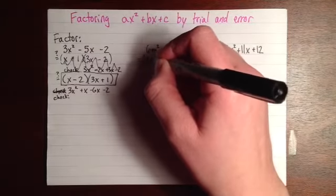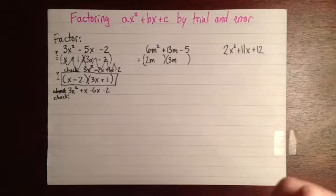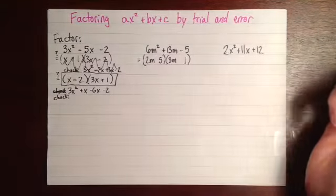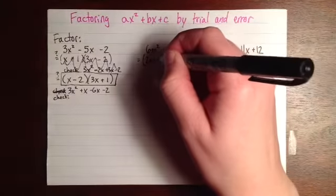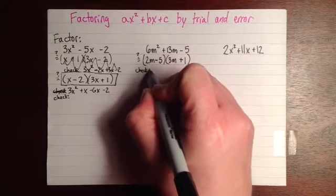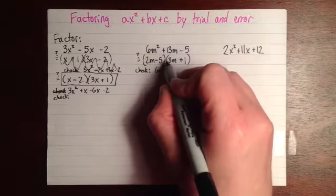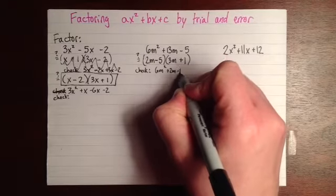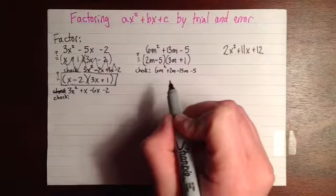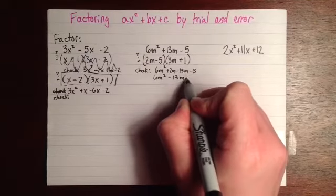So let's try 2m and 3m. And then we'll try 1 and 5. Let's try the 5 here and the 1 here. And then we'll just make a guess for signs. I'll put the negative here and the positive here. That gives us 6m squared and plus 2m minus 15m minus 5. And actually, this is really close to what we want. It's not right, but it's really close. Because this is 6m squared minus 13m minus 5.